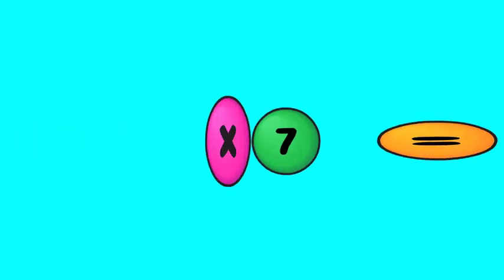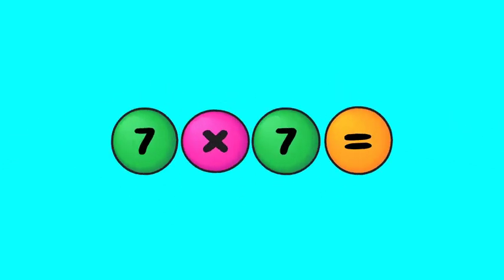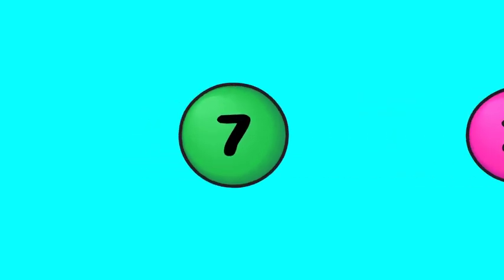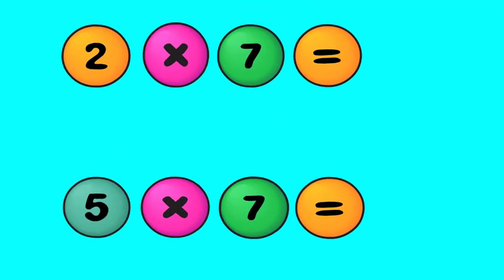Let's try 7 times 7. Pull apart 7 into 2 plus 5. Multiply each addend by the other factor. That's 2 times 7 and 5 times 7.